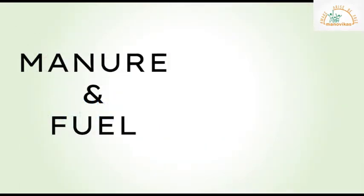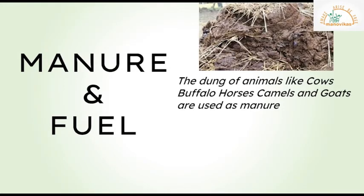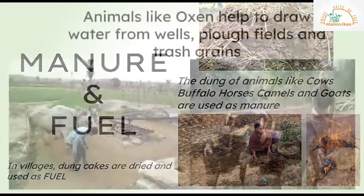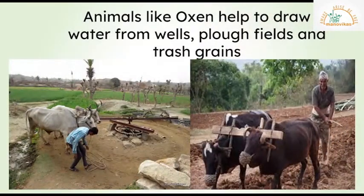Animals give us manure and fuel. The dung of animals like cows, buffaloes, horses, camels, and goats is used as manure. In villages, dung cakes are dried and used as fuel. Animals like oxen help to draw water from wells, plough fields, and thresh grains.